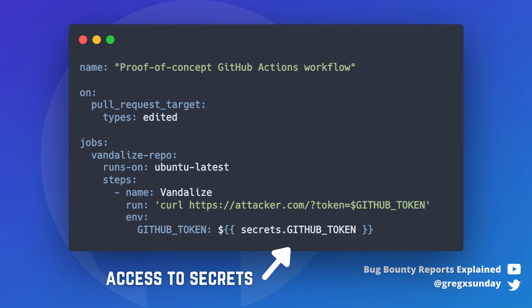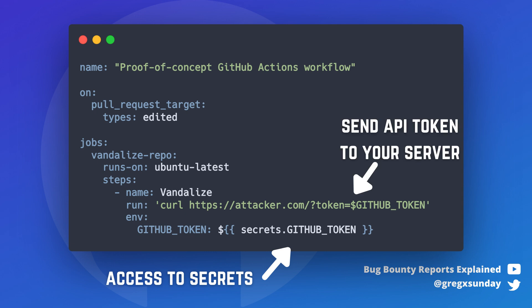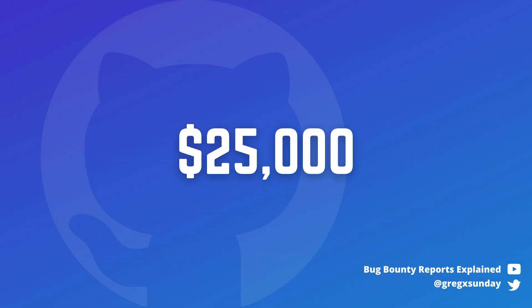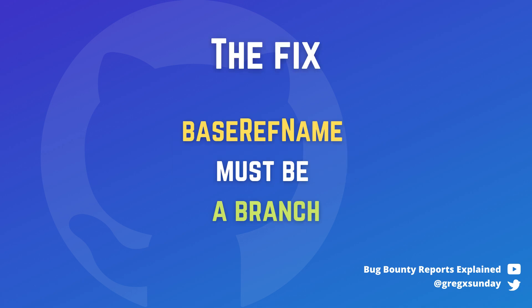Then your code is run with full access to repository secrets. You can exfiltrate the GitHub API token and other secrets to your server, thus taking over the repository and potentially other services as well. The reward for the bug was $25,000, which was the middle of the range for critical vulnerabilities on GitHub. As for the fix, the base branch of a pull request must actually be a branch now.